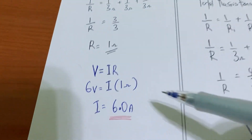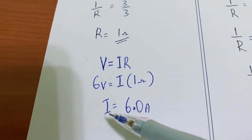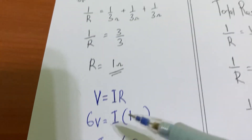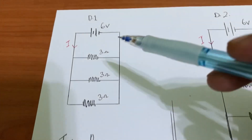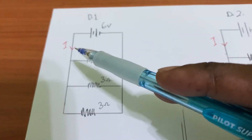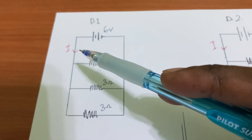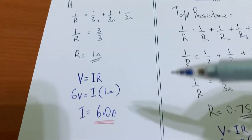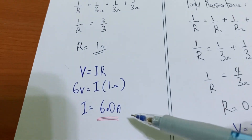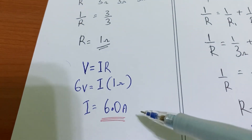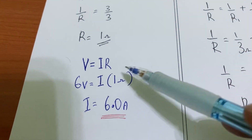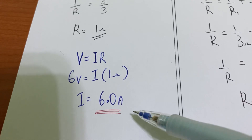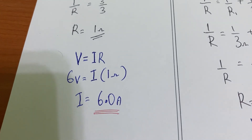To calculate the effective current, using V equals IR, the effective current value is 6 ampere.